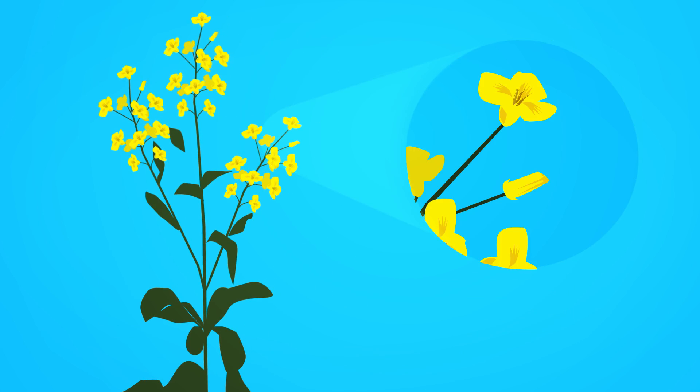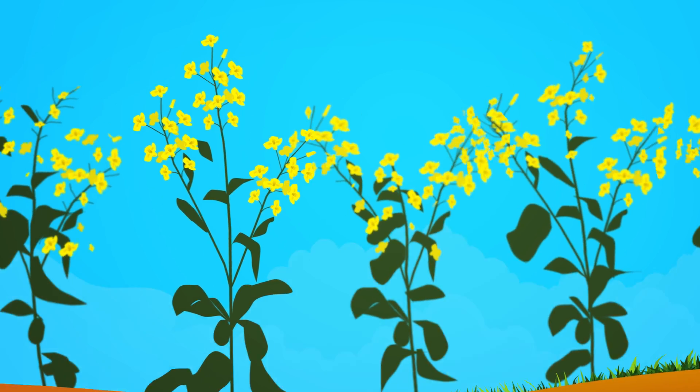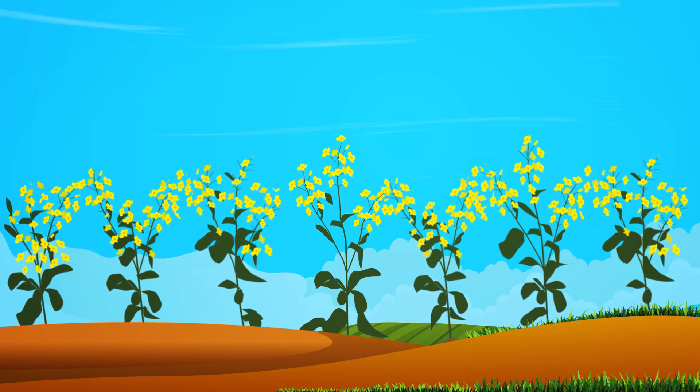Canola is easy to spot by its bright yellow flowers. These beautiful fields swaying in the wind have become a common sight on the prairie landscape.